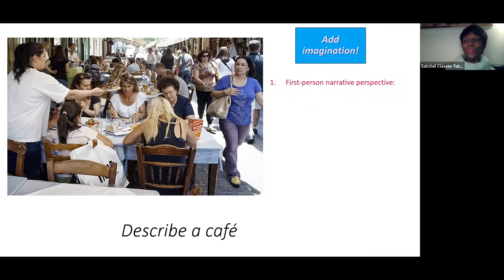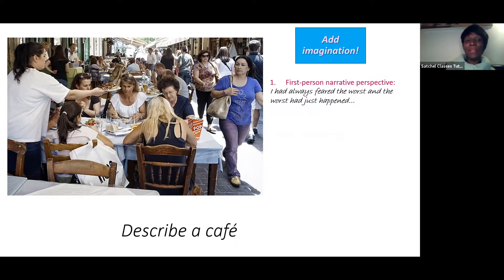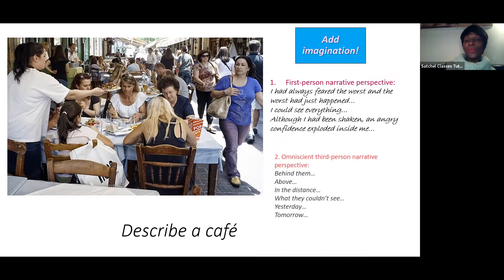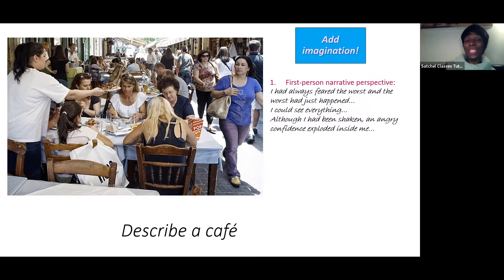The first thing to engage your readers is really thinking about which narrative perspective you'd be writing from. Would you be writing from one of the waitresses' perspectives — tired or happy all day, or maybe the mood changes? Would you be writing from a passerby looking into the cafe? Maybe from a customer who's there — a birthday celebration, a family lunch, or a business lunch. You can describe from any perspective.